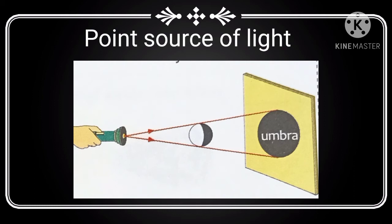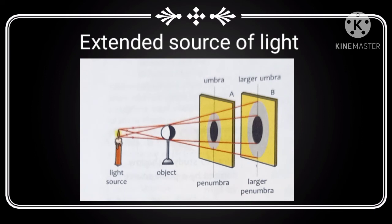Now we discuss about the point source of light. Any source of light that has a negligible extent is called a point source of light. The source may be small as in light from a pinhole, or the source may be larger but at a sufficient distance so that it can be considered as a point. The rays which start from a point source travel in all directions and reach the screen.